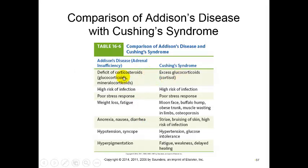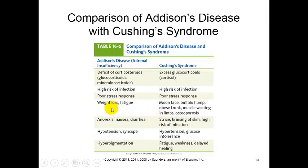Just a comparison: Addison's disease is a deficit of corticosteroids and Cushing's is an excess. The mineralocorticoids are the ones that deal with sodium levels. Both have increased risk for infection and both have a poor stress response because they're unable to use corticoid levels appropriately. Addison's disease is more typically weight loss, fatigue, anorexia, nausea, diarrhea, hypertension, syncope, and hyperpigmentation - which is increased pigment in the skin.